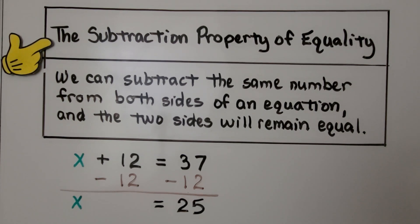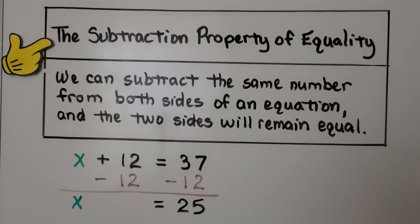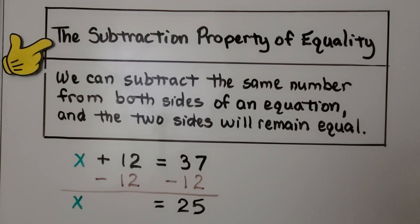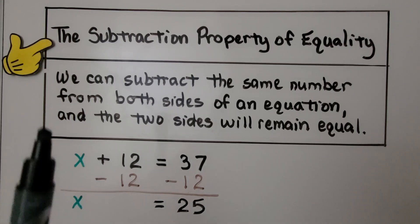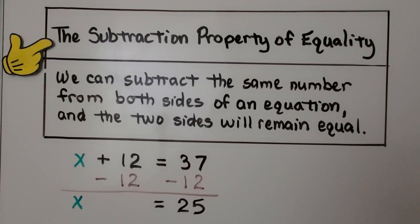The subtraction property of equality states we can subtract the same number from both sides of an equation, and the two sides will remain equal. So that's what we've been doing so far in these lessons for 11.2. We've been doing the subtraction property of equality with addition equations.